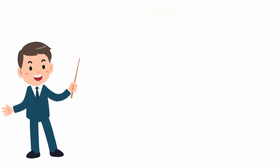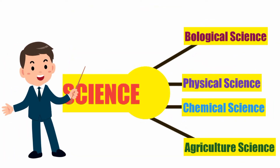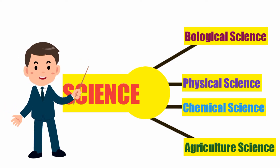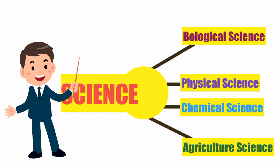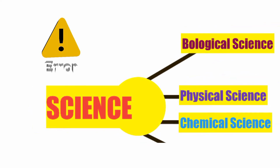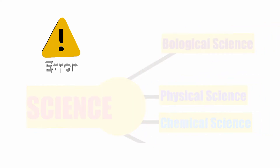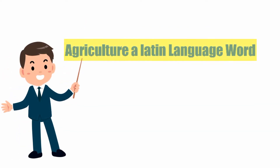Science is subdivided into four major categories: the first is biological science, the second is physical science, the third is chemical science, and the fourth is agricultural science. We will not discuss the other three sciences today — our topic is agricultural science.